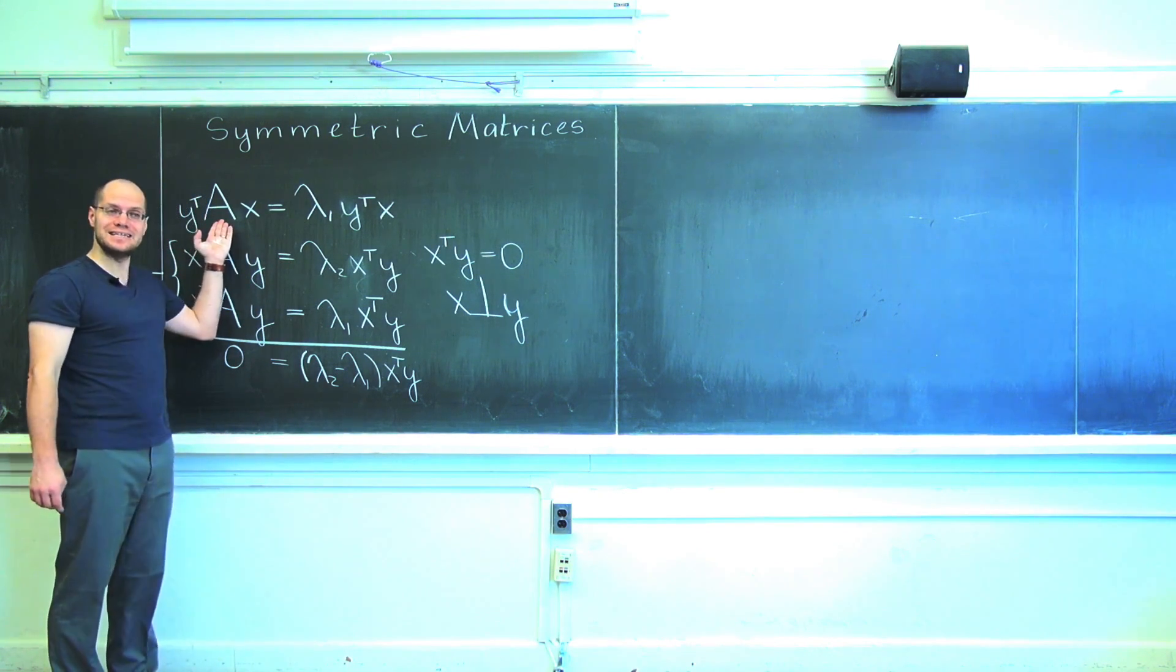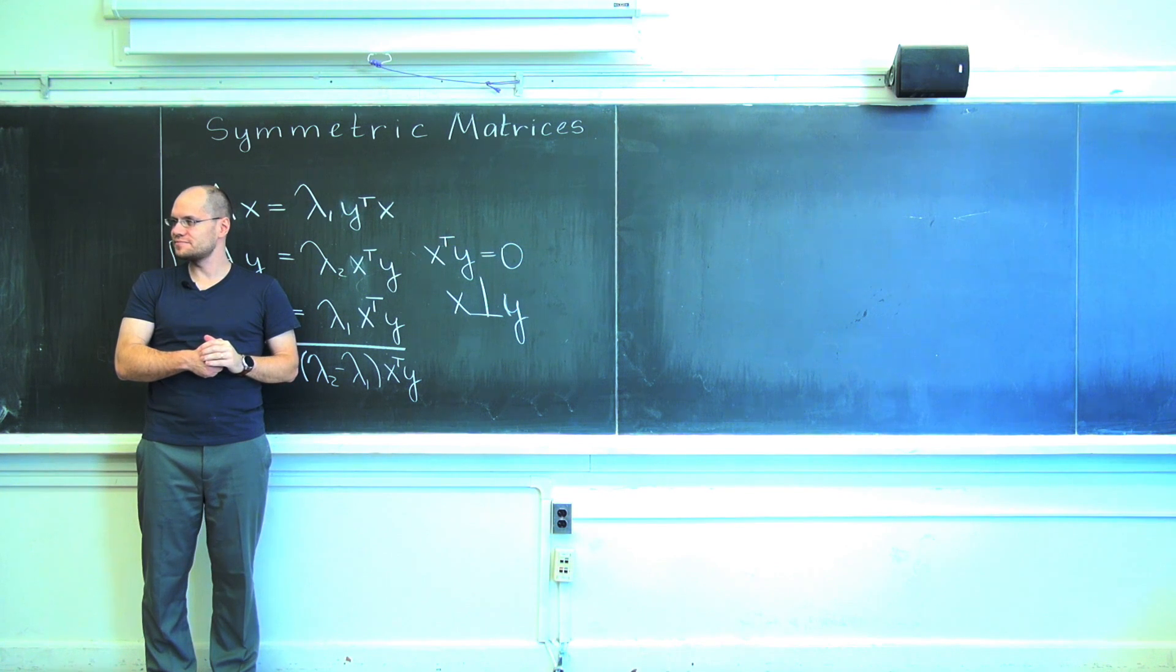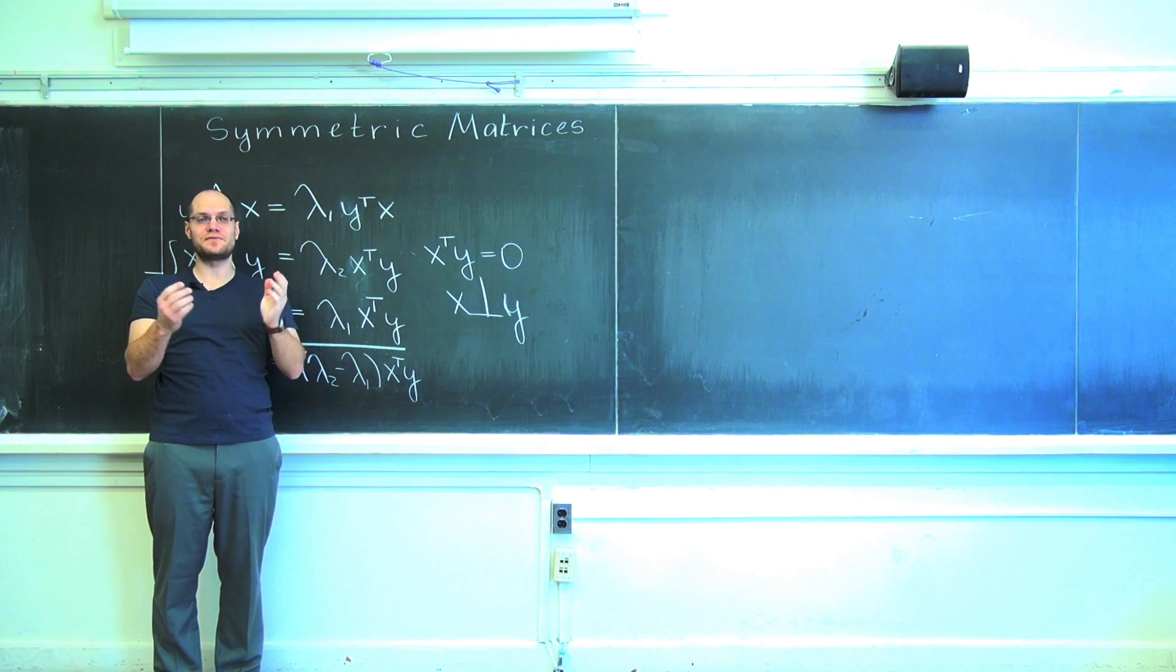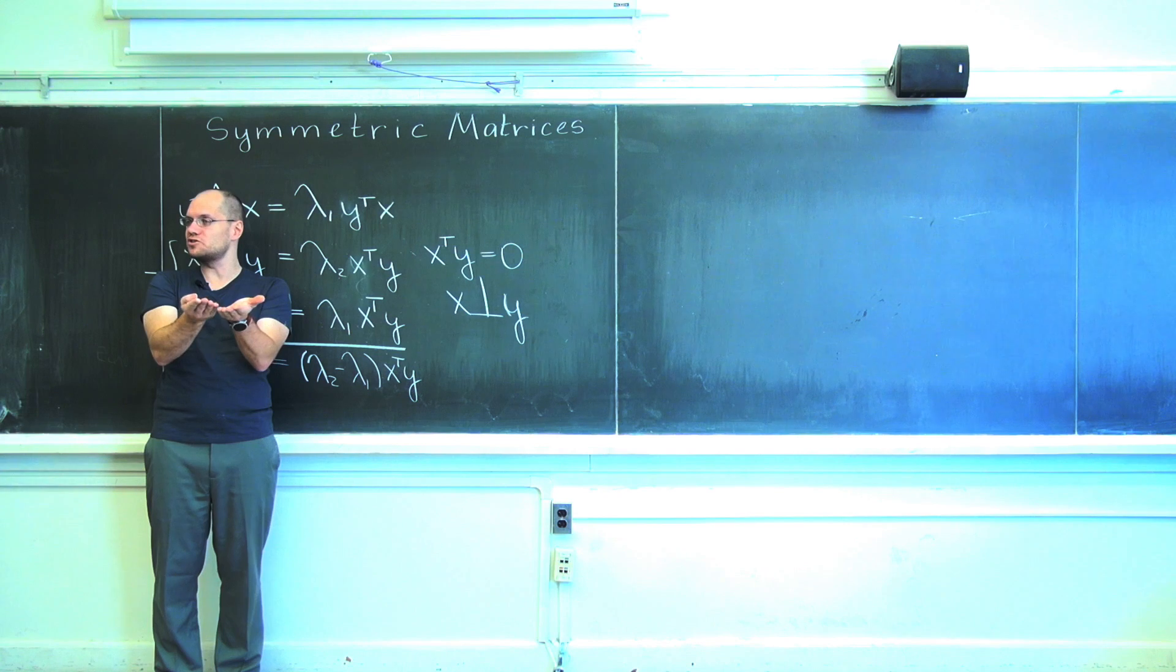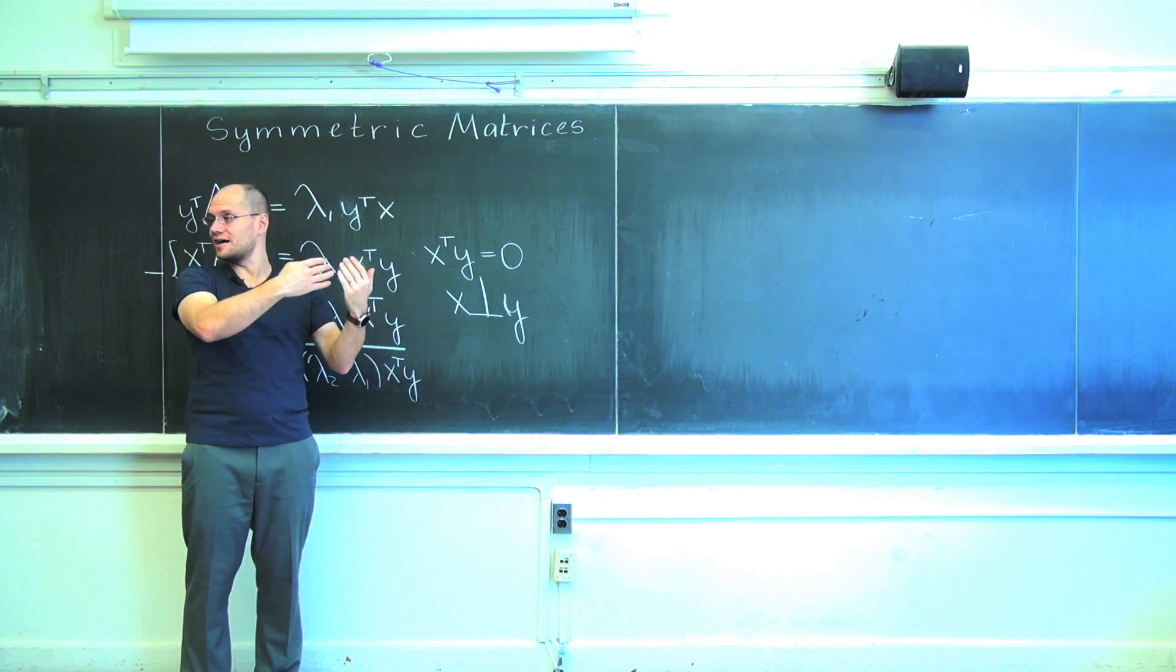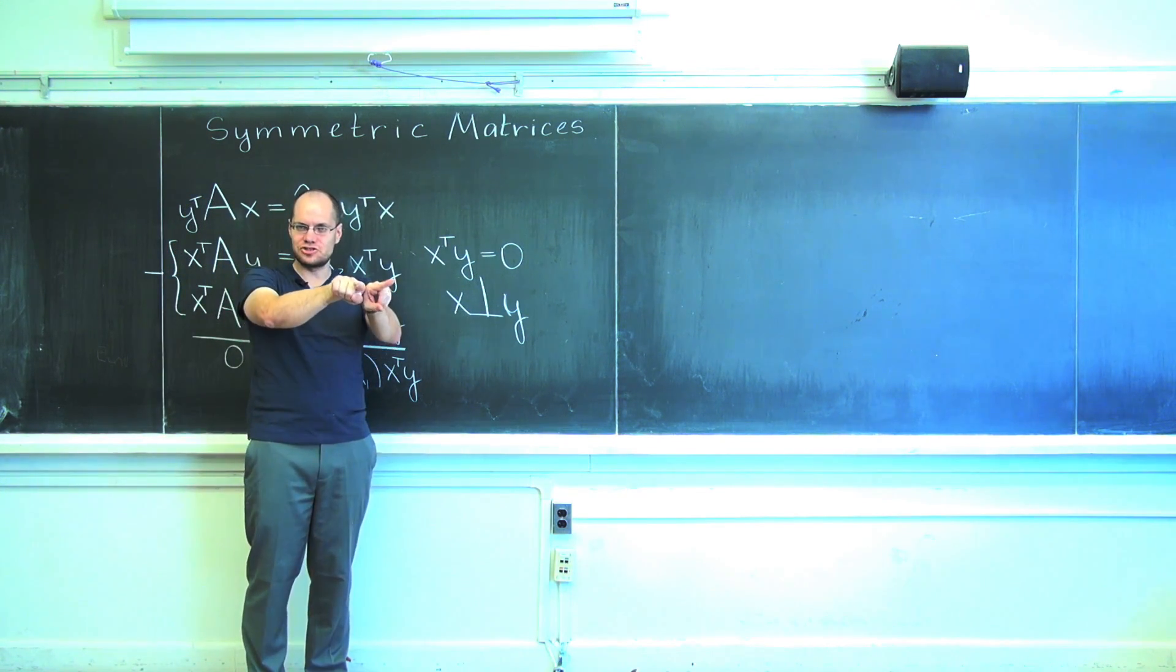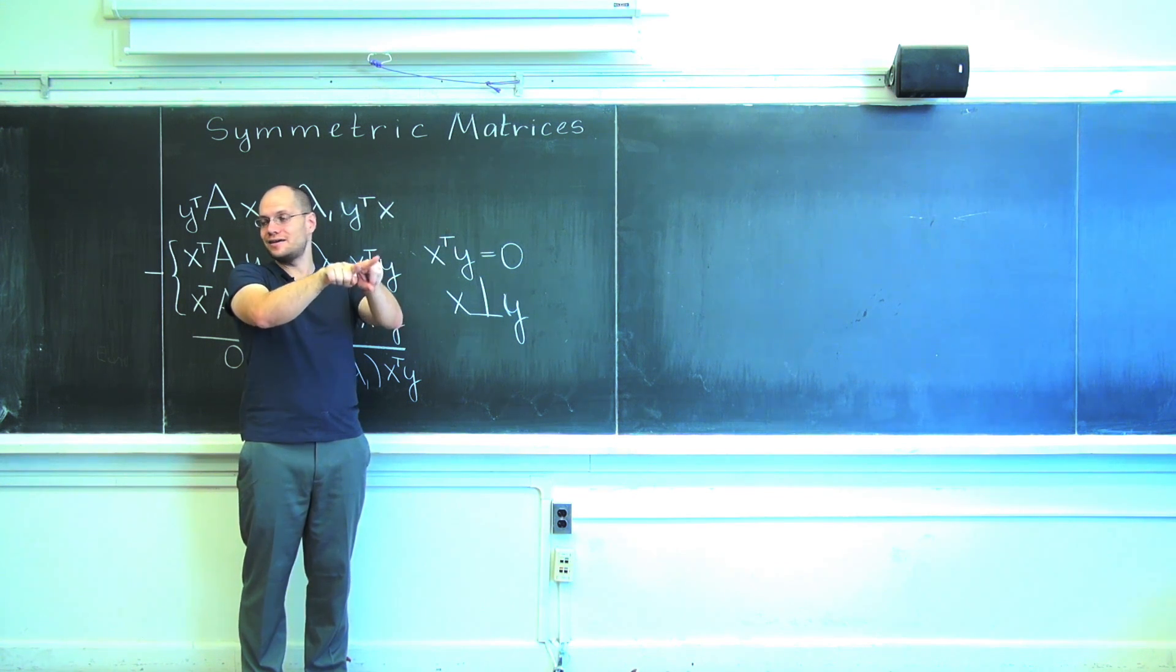So if a symmetric matrix has n distinct eigenvalues, all of its eigenvectors are orthogonal to each other. What if the symmetric matrix doesn't have distinct eigenvalues? What if there is a double eigenvalue and there is a whole eigenspace corresponding to that eigenvalue? Well, it's very simple. That eigenspace will be orthogonal to any other eigenspace as we proved here. And within that eigenspace I can easily choose my two eigenvectors to be orthogonal. Maybe first I'll choose them randomly and then I'll use Gram-Schmidt orthogonalization to make them orthogonal.